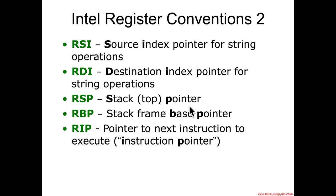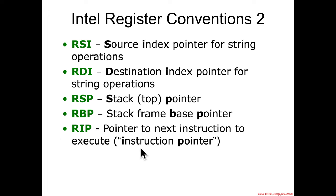RSP — SP for stack pointer — points at the top of the stack, meaning the last value that was put on the stack. RBP is the stack frame base pointer, used to point at the base of the current stack frame. We'll talk about the stack next. And RIP — the instruction pointer — points at the next instruction that the processor should execute.